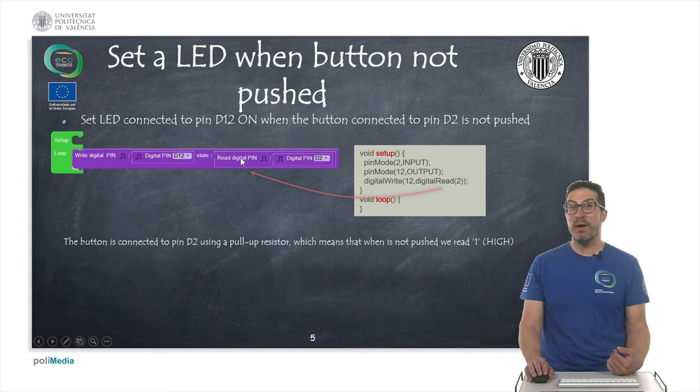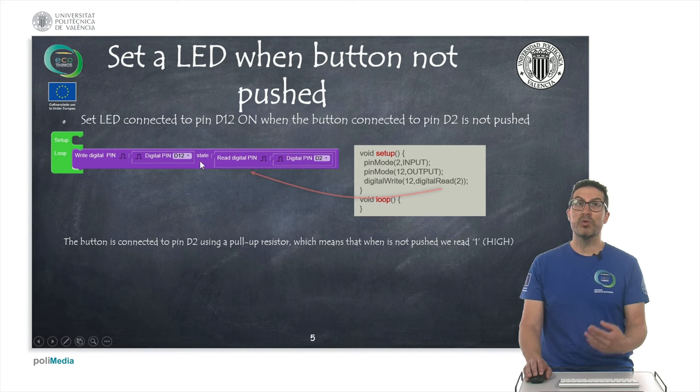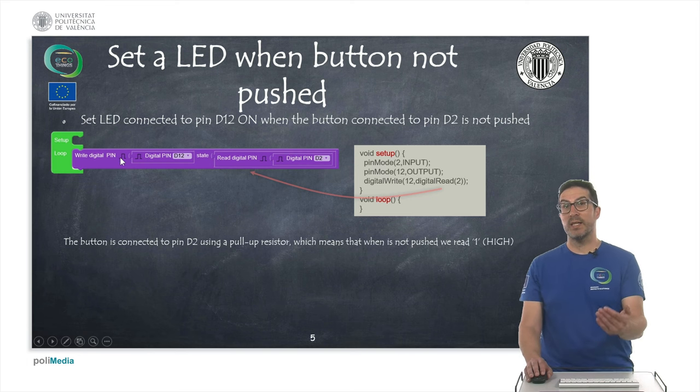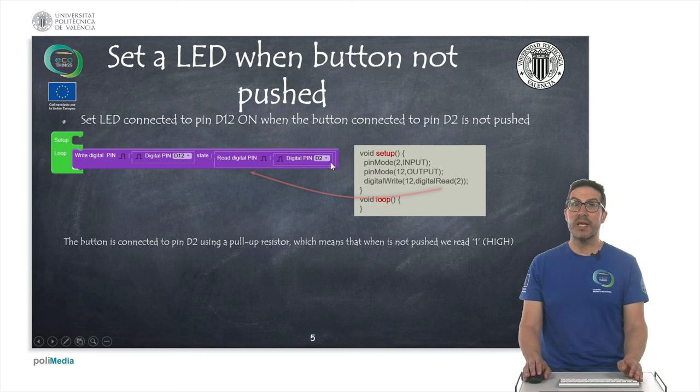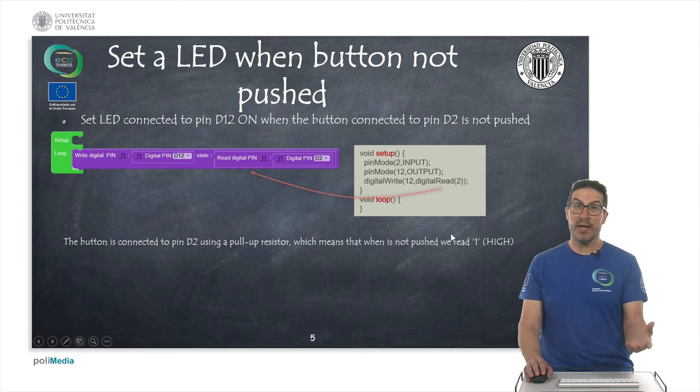We read the value, the signal that we get from the button, which is connected to pin D2. And the result is the state that we want to use for our LED. So we can set the state high or low accordingly to the state of the button. In this case, the button is connected through a pull-up resistor, which means that when not pushed, we read 1 as a high.